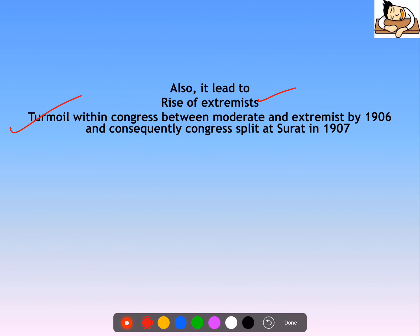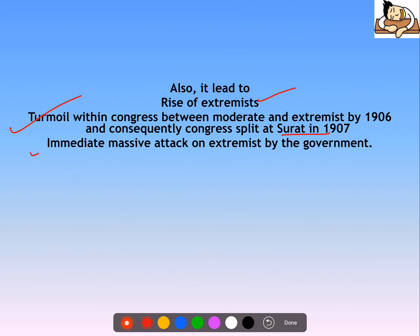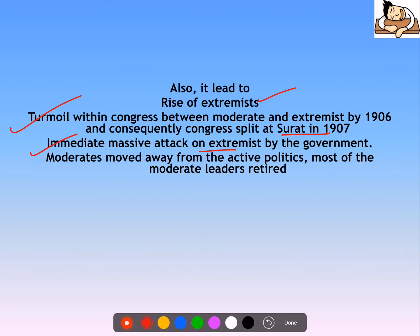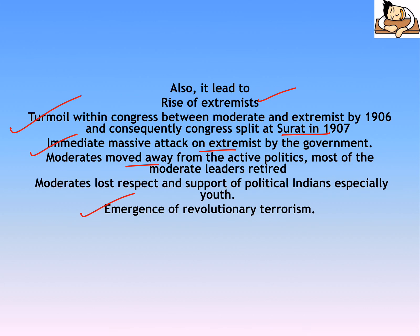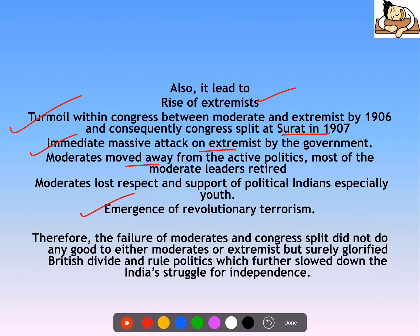The turmoil between moderates and extremists grew so large that the Surat Split happened in 1907. The government launched an immediate massive attack on the extremists. The biggest advantage for moderates was that the government never directly attacked them, because their methods were too simple to warrant it. Eventually, moderates moved away from active politics — most retired, and they lost the respect and support of political leaders, especially youth. This also led to the emergence of revolutionary terrorism.